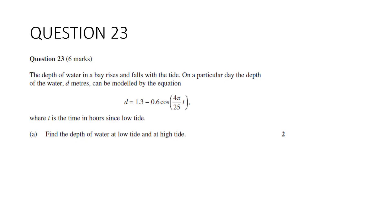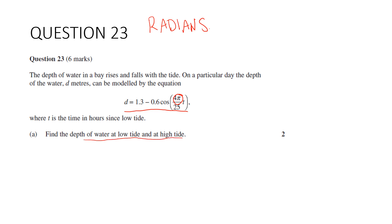Question 23. The depth of water in a bay rises and falls with the tide. On a particular day the depth of water d metres can be modelled by this equation. T is the time in hours since low tide. Part A: find the depth of water at low tide and high tide. This is a trigonometric model, and if you're going to use this in your calculator, you definitely need to be in radians — because there is pi here. Most trigonometric models are going to be in radians anyway, particularly when time is involved.